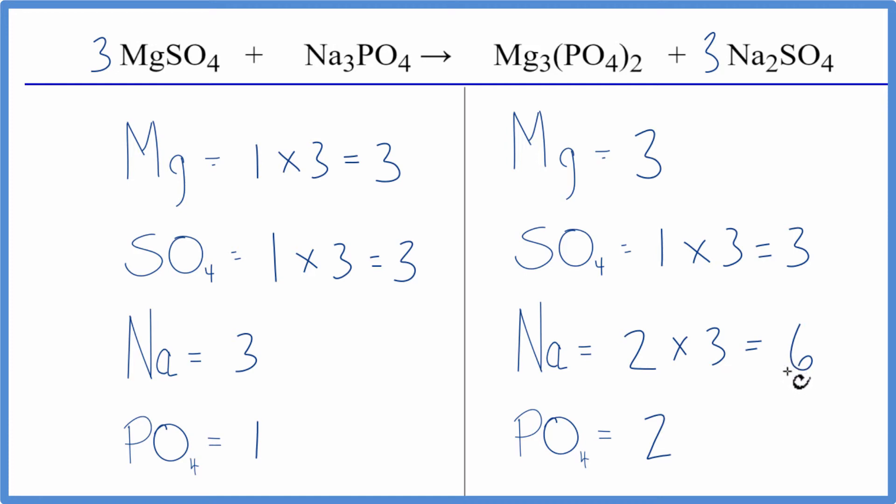That's pretty easy to fix. We have three here and six here. If we put a two in front of the sodium phosphate, that'll fix the sodiums. That might even fix the phosphate, the PO4. Let's see - three times two gives us six. Sodiums are balanced. And then one phosphate, one PO4, times two gives us two. That's balanced, so we're done.